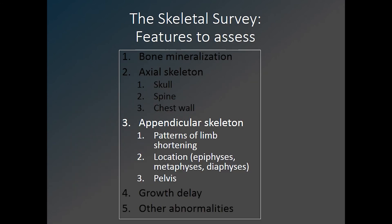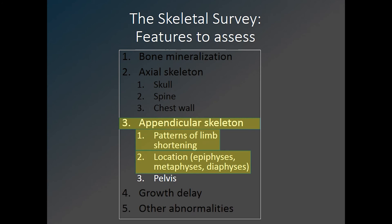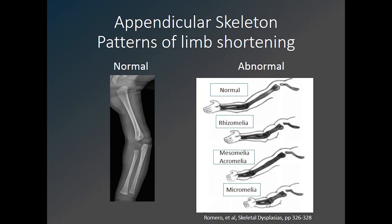Next, we will move on to an assessment of the appendicular skeleton. We want to assess any specific patterns of long bone limb shortening, and where in the bone the abnormality occurs — the epiphysis, the metaphysis, the diaphysis, or some combination of these. It is helpful to look for specific patterns of shortening within the long bones. When the proximal segment, or humerus, is shortened, this is rhizomelia. When the middle segment is shortened, mesomelia. When the distal segment is shortened, acromelia. And when the entire limb is shortened, micromelia.